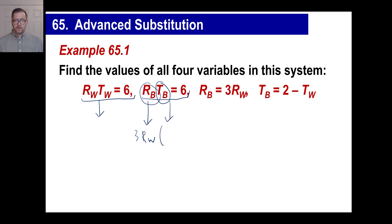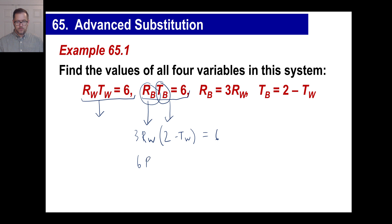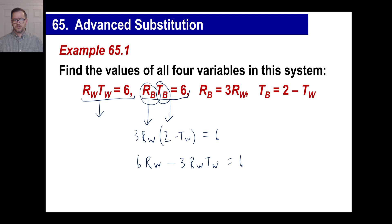We got the time of the bicycle equals 2 minus the time of the wagon, and that all equals 6. So we have 3 times the rate of the wagon times 2, giving us 6 R sub W, minus 3 times R sub W times T sub W equals 6. And you might think you can't do anything with that — there are two different variables. But then you look up and see the very first equation: rate of the wagon times time of the wagon is 6.